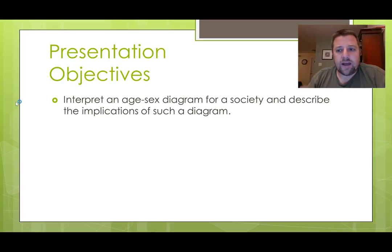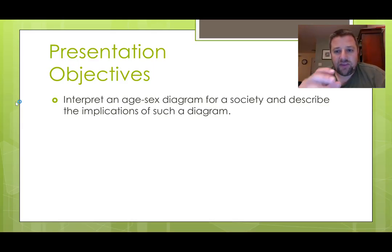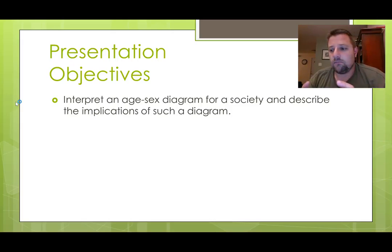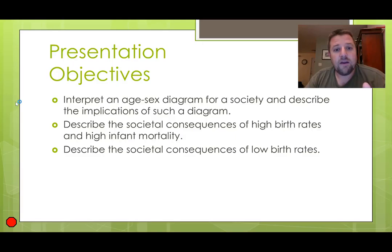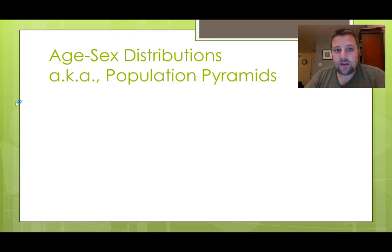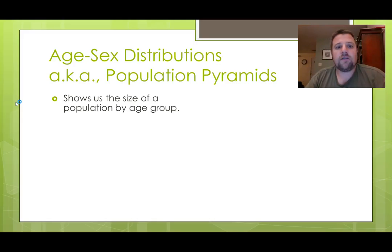We're going to look at diagrams called age-sex diagrams or population pyramids. They're specific to a nation or a region, and they describe the breakdown of the population in terms of gender and age groups. I want to use those to briefly look at how high birth rates and high infant mortality, or conversely low birth rates, might change the population over time. These age-sex distributions, or population pyramids, show us the size of a population by age group.